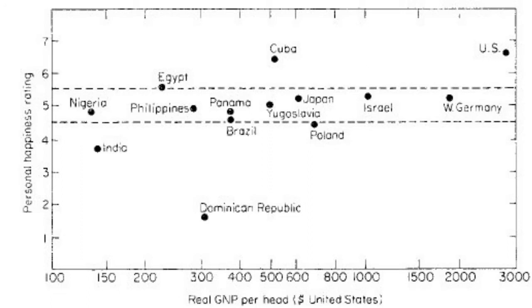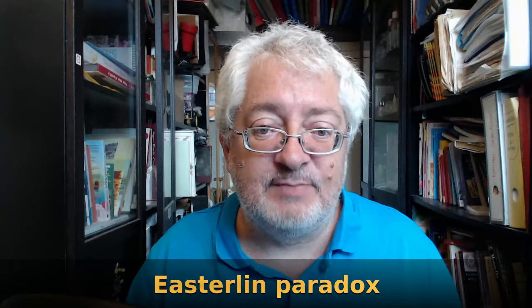Easterlin sees no correlation between these numbers, and he plots it accordingly — a straight line with some outliers, showing that real GNP per head and happiness do not have any correlation. This is disputed — as I told you, everything is disputed — but this is one of the most disputed points. He calls this the Easterlin paradox, because Easterlin first pointed it out.